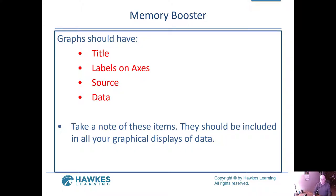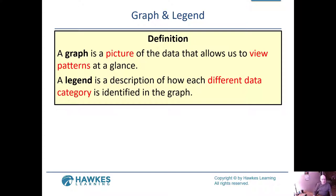We're talking about graphical ways of describing data, and here are some important things a graph should have: titles and labels on axes — things you need when looking at a graphical display of data. If you don't have the title, you don't immediately get the idea of what the graph is for. You need the labels on the axes so you can tell what the vertical and horizontal parts mean. An infographic is another way of putting it. The legend is a description of how the data category is identified in the graph.